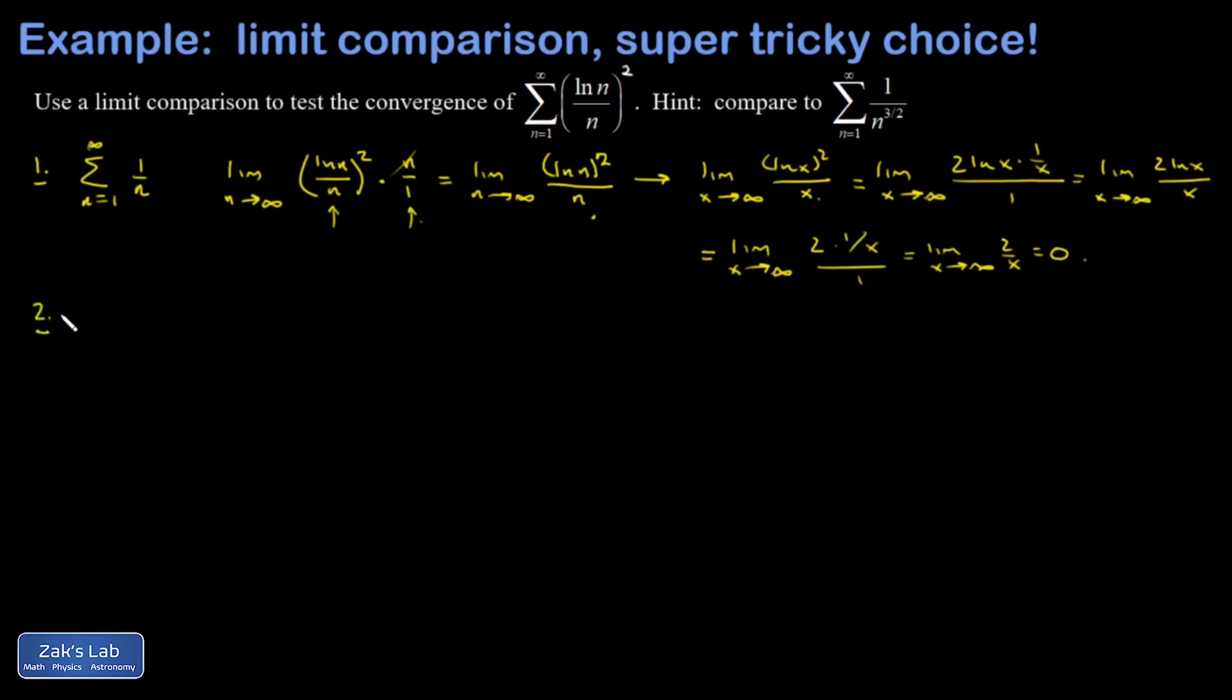The next thought that occurs to me is maybe we should compare to something that's converging a little more aggressively. And the natural choice for that is to compare to the convergent p series, one over n squared. So let's give that a try.